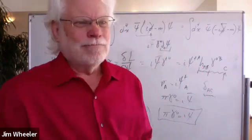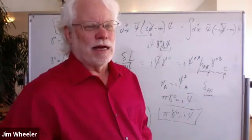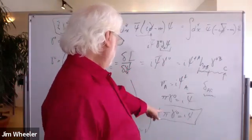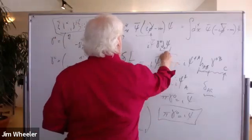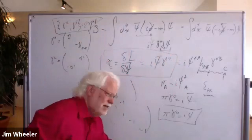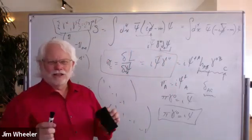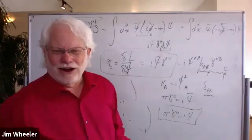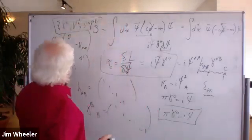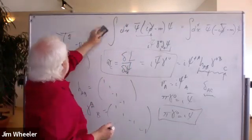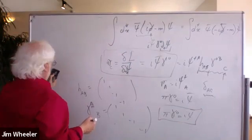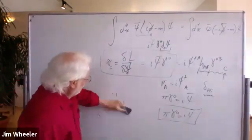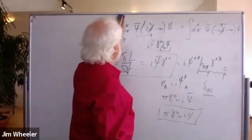Anybody notice anything odd about that conjugate momentum? That guy right there — i psi-bar gamma-zero. There's no derivative. That momentum has no derivative in it. Usually it's something like psi-dot, but not here. You just press on nonetheless.